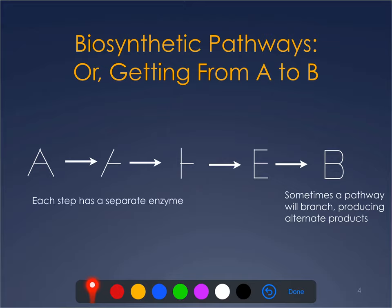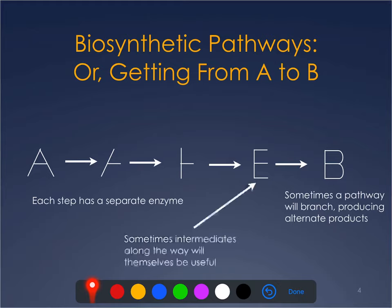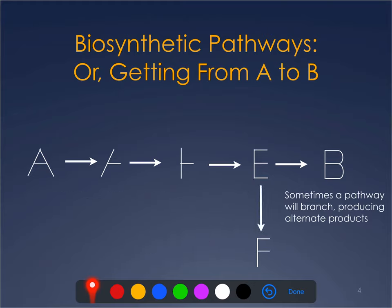Each of these steps has a separate enzyme, typically controlled by a separate gene. Sometimes intermediate steps are useful in and of themselves — on the path from A to B, if we needed an intermediate E, we could stop there and just use E, or take some for E and use the rest to continue making B. You also sometimes have branch points: from intermediate E, you could use one enzyme to attach the curly bits and get B, or use a second enzyme to cut the bottom off and get F.